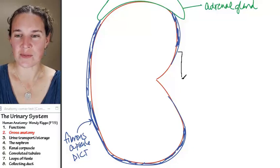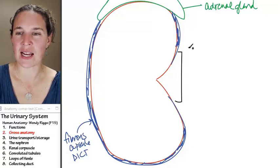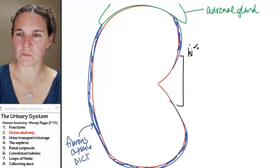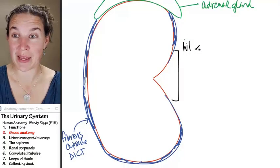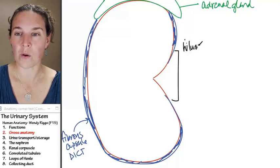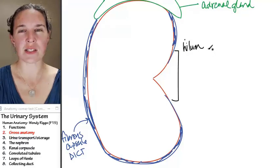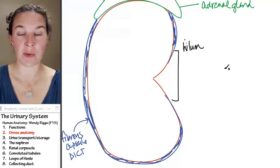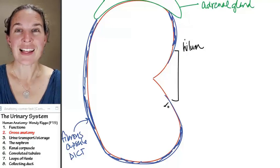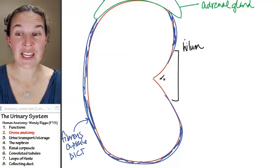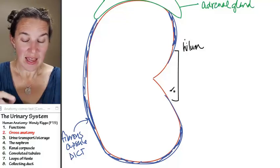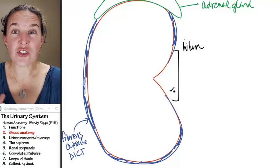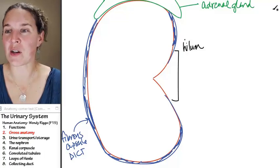This zone right here is called the hilum. The hilum of the kidney is the location of this indentation, and there's several structures that come out of the hilum that are relevant.